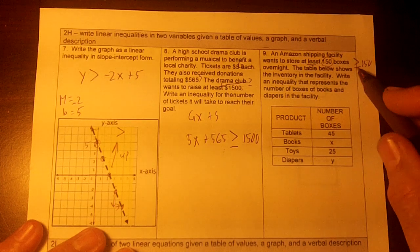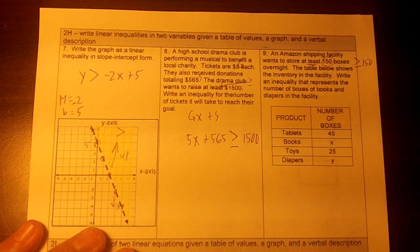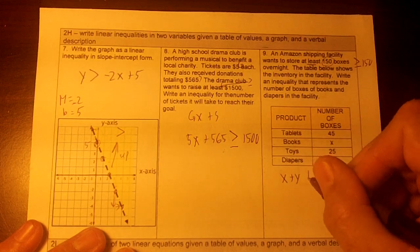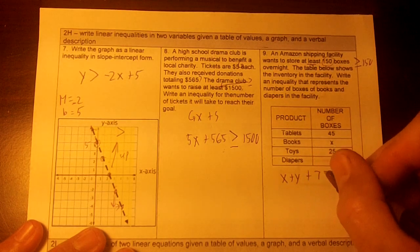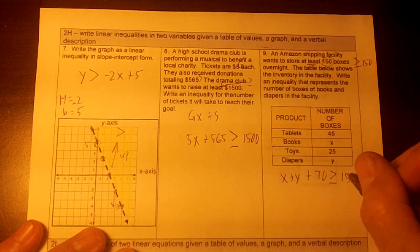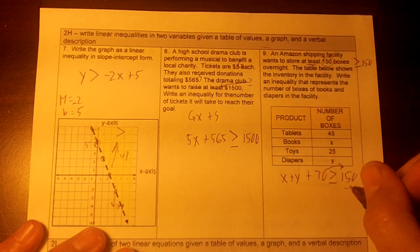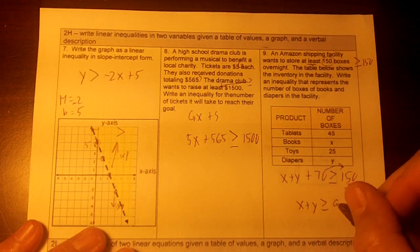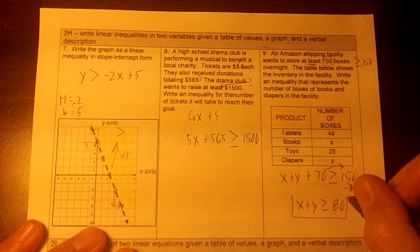Okay, so we're going to add all these boxes up, and it needs to be greater than or equal to 150. So we're going to do x plus y plus, what's this going to equal? 70. Greater than or equal to 150. Move over the 70. So I'm going to have x plus y greater than or equal to 80. That's all you've got to do.